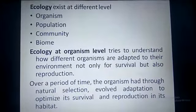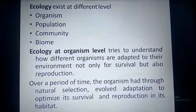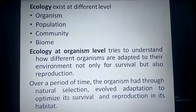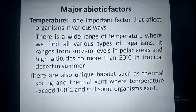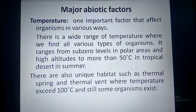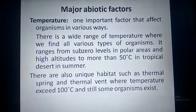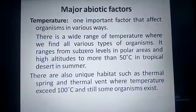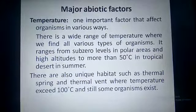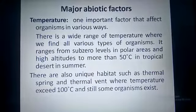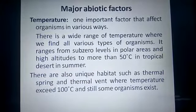Now we are going to discuss the major abiotic factors, or physical environmental factors, that affect living organisms in various ways. The first abiotic factor is temperature. Temperature is one important factor that affects organisms in various ways. It ranges from sub-zero levels in polar areas and high altitudes to more than 50 degrees Celsius in tropical deserts in summer, and in all these places we find different types of organisms with special adaptations.